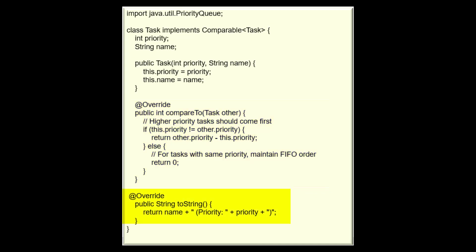This other part of the code defines a toString method within the Task class, which means we are specifying how instances of the Task class should be represented as a string when they're printed or converted to a string explicitly. This is particularly useful for debugging or displaying information about objects in a human-readable format.